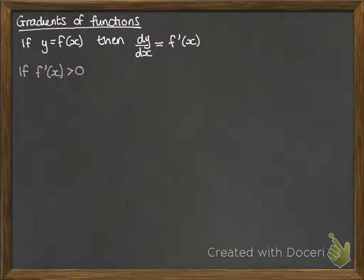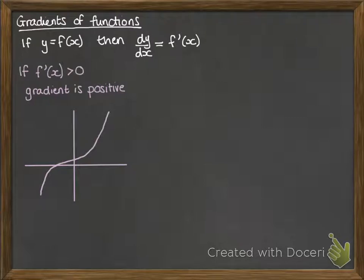We can get some important results here. If f'(x) is greater than 0, that means the gradient is positive at whatever portion of the graph we're talking about. This could be over the whole graph like this, so it's always going up if the gradient is positive.